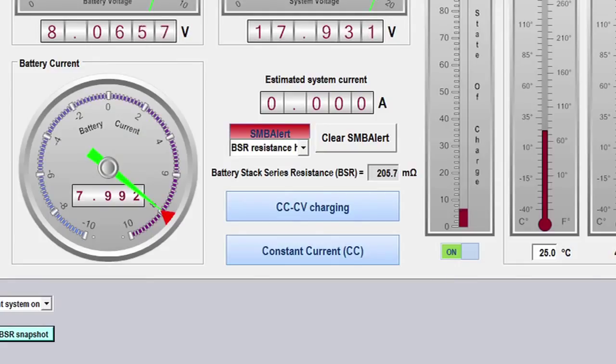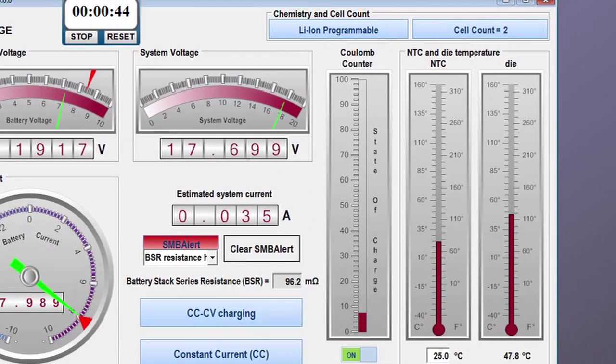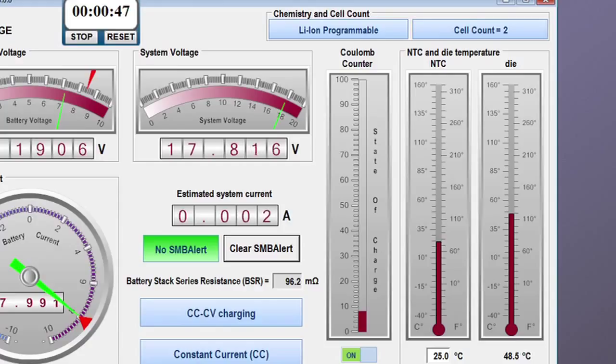I can reduce the series resistance, take a BSR measurement, and clear the alert. Now let's check back on the Coulomb counter. The stopwatch indicates that about 45 seconds have passed, and you can see that the Coulomb count has increased from its initial value of 0% to about 7 or 8%. Perfect.